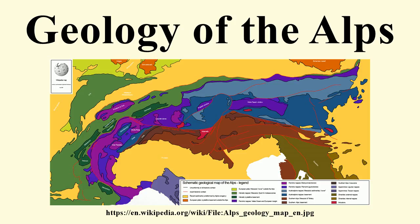Crystalline basement rocks, which are exposed in the higher central regions, are the rocks forming Mont Blanc, the Matterhorn, and high peaks in the Pennine Alps and Hohe Tauern. The formation of the Mediterranean Sea is a more recent development and does not mark the northern extent of terranes originating within the African plate.